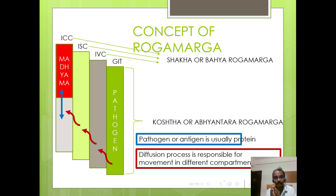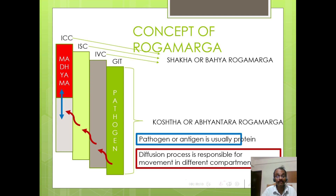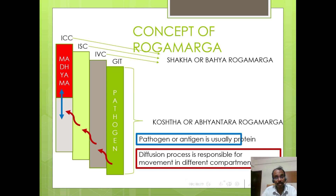Now how this applies in terms of Roga Marga: along with food, pathogens also enter the alimentary canal via the mouth. These pathogens move into the intravascular compartment — smaller ones via the hepatic system, larger molecules via the lymphatic system. From there they enter the blood vessels, then the capillaries, then the interstitial compartment, and finally the intracellular compartment. This comprises the Roga Marga pathway.